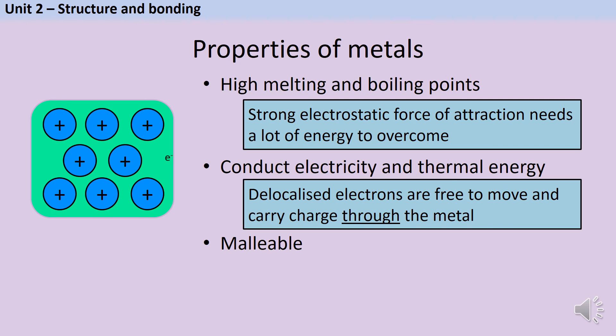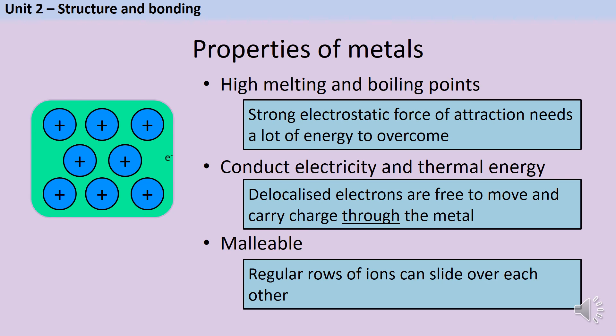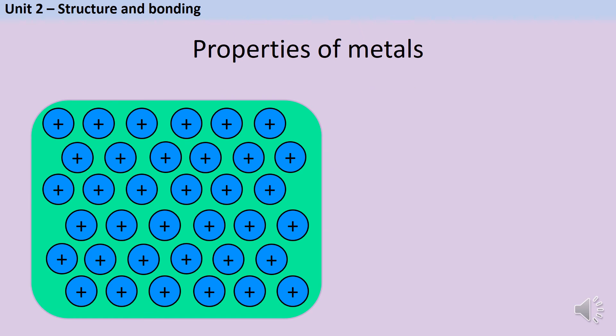Finally, metals are relatively soft and malleable because the positive ions are arranged in these regular rows. This means that it's possible for all of the ions in one row to move over the row below it without disturbing it. Let's look at this in action. If I were to push the top row of ions in this metal, it's possible for them to all shunt along and slide over the other layers.